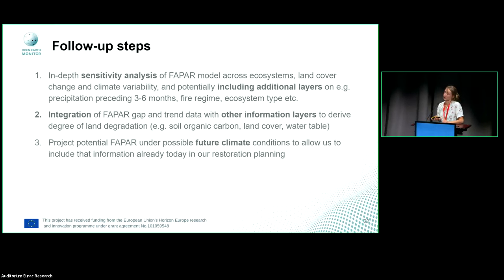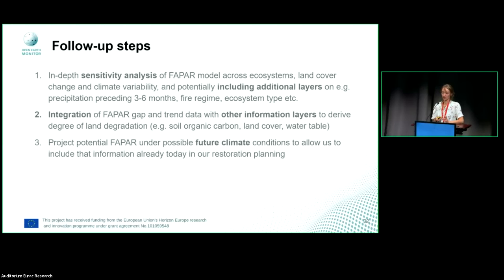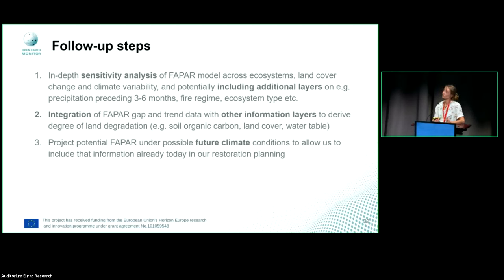Following up, our research will include going more in-depth into the model with a sensitivity analysis and looking at how it performs with different ecosystems. We may include additional layers — for example, not just annual precipitation but precipitation from the last three to six months, which may be more indicative of drought conditions. To actually assess land degradation, we also need to incorporate the gap and trend data with other layers like soil organic carbon or the water table, and we will test how this works for future climate scenarios.